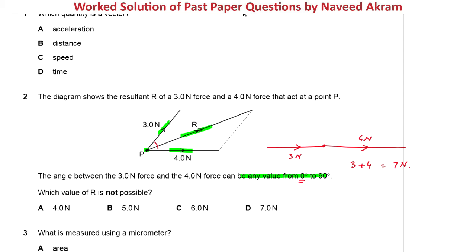Now, if the angle between 3 Newton and 4 Newton force is 90 degree, then what will happen? Suppose this is 4 Newton force and this is 3 Newton force. Then the resultant vector can be easily found by Pythagoras theorem. We will translate this 3 Newton vector here. And this will be our resultant vector. This angle is 90 degree, this is 4 Newton, this is 3 Newton. We will apply Pythagoras theorem and R will be equal to square root of 4 square plus 3 square, which equals 5 Newton.